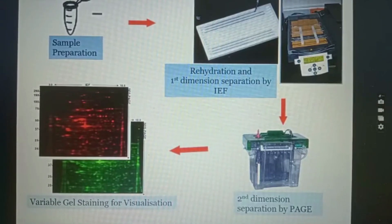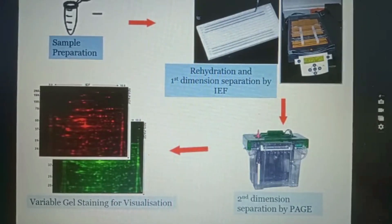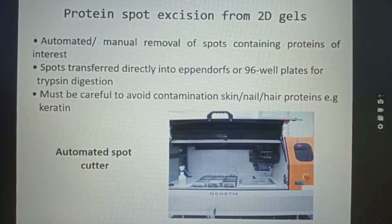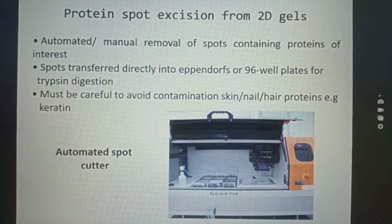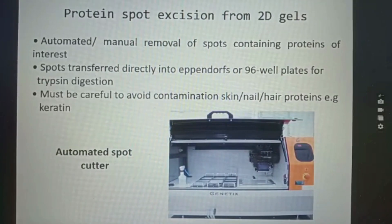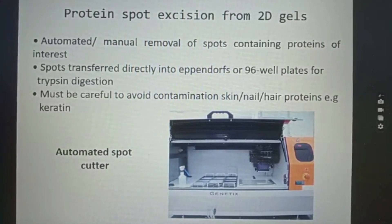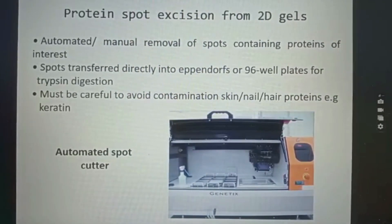In most cases, each protein spot represents an individual protein. After gel image analysis, we excise protein spots of interest either using a manual approach or an automated system, de-stain the excised protein spots, and incubate with trypsin enzyme. Tryptic peptides are further incubated with extraction buffer, and the supernatant is used for mass spectrometry analysis.